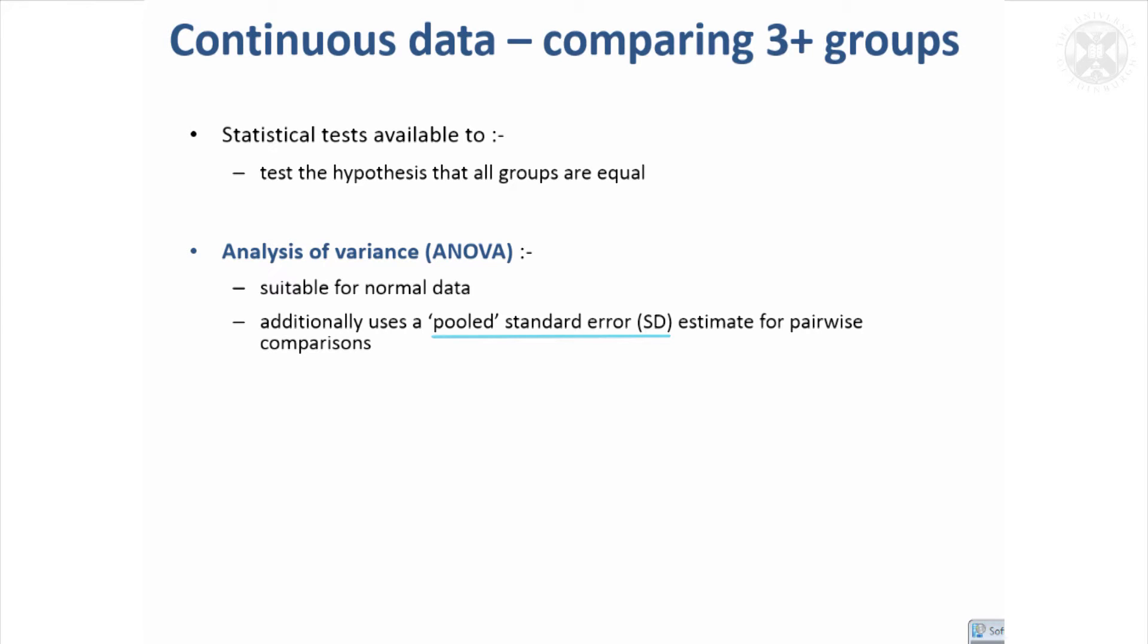Another test with an odd name after two people: the Kruskal-Wallis test. That's the equivalent of ANOVA but for non-normal data, so that's another example of a non-parametric test, whereas ANOVA is a parametric test.